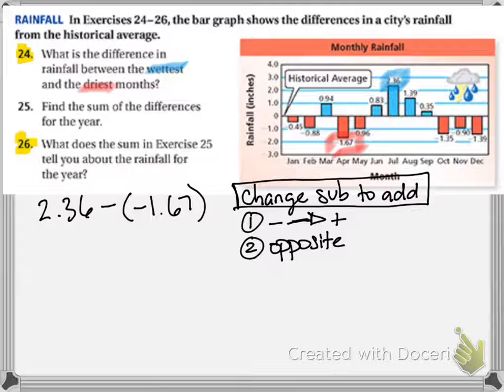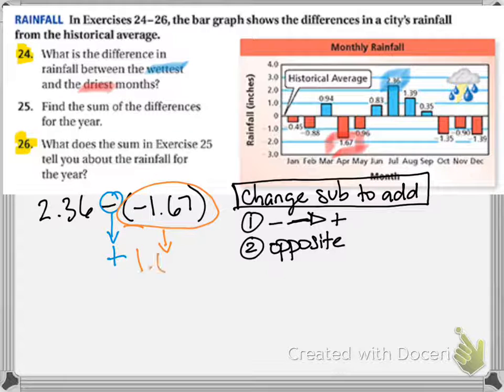So we take the subtraction and we change it to addition. We take this second number and we change it to the opposite, so the opposite of negative 1.67 is positive 1.67, and then the first number stays the same. So now we're just adding, and these are two positive numbers.